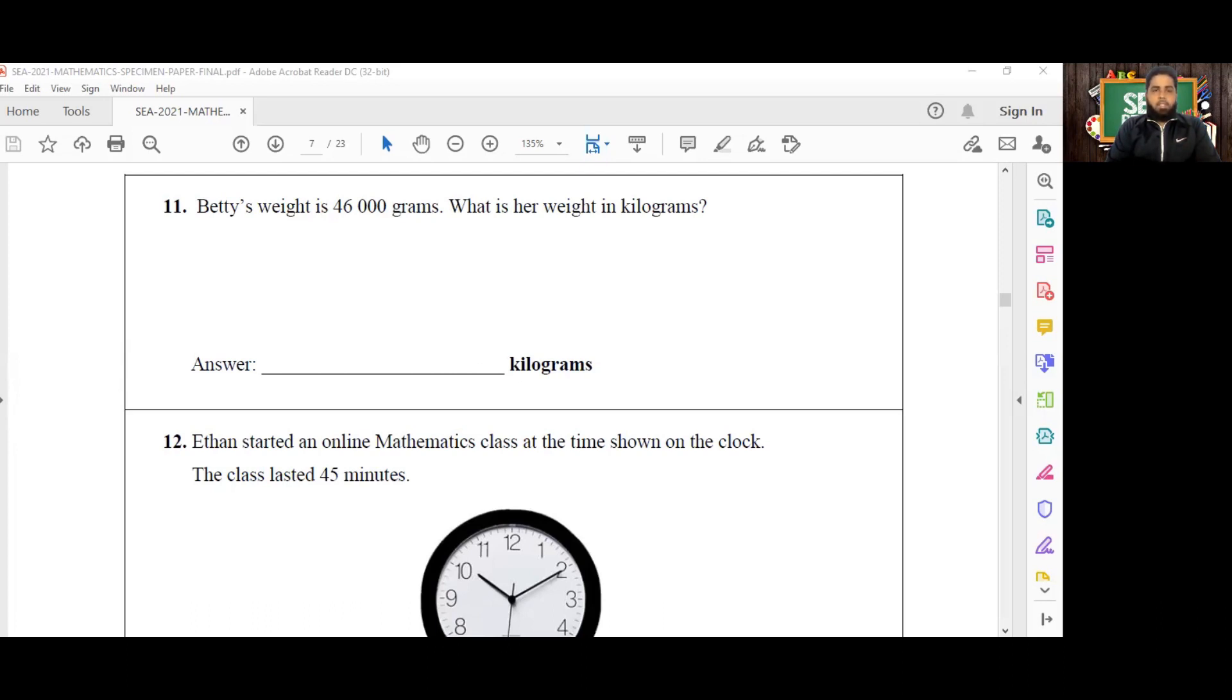So Betty's weight is 46,000 grams. What is her weight in kilograms? All we have to remember here is that there are 1,000 grams in a kilogram. So one kilogram equals 1,000 grams.